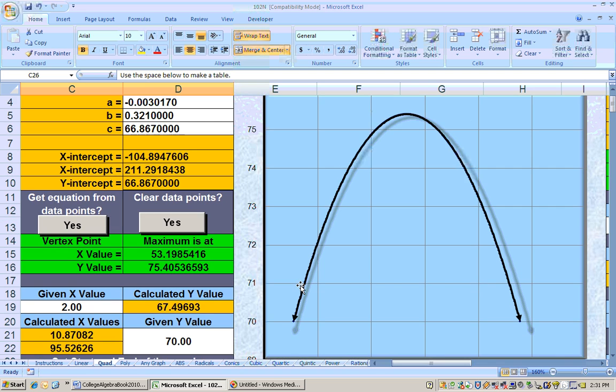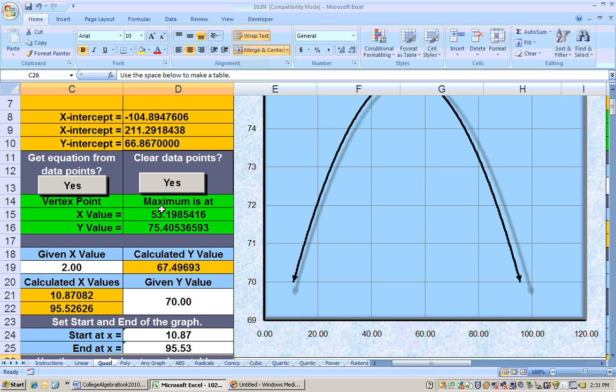What's the maximum? Well, here's the maximum spot right here, 75 point something. What was it? 75.4. When did that occur? Down here, somewhere between 40 and 60 years, but you get it super exact right here.